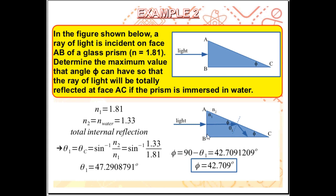When light encounters an interface and is perpendicular to that interface, the law of refraction tells us the light will continue straight into the other medium — no bending or change in direction. So no change in the orientation of the light when it passes from water into the prism, because the incident light is perpendicular to the interface. Once inside the prism, the light continues until it strikes face AC.